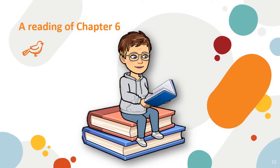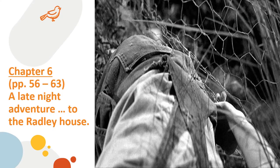In chapter six, we have the children's final attempt to make contact with Boo Radley. It's the last night of the summer holiday before Dill returns to his mother. We're going to go to page 57, second paragraph from the top.